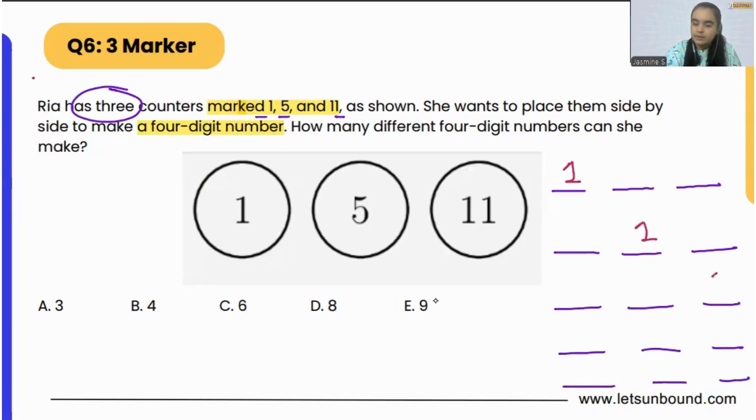If I'm going to put 1 over here, and another 1 over here, and after that put 5 here and 11 over here, this is our first number which has four digits: one thousand five hundred and eleven.